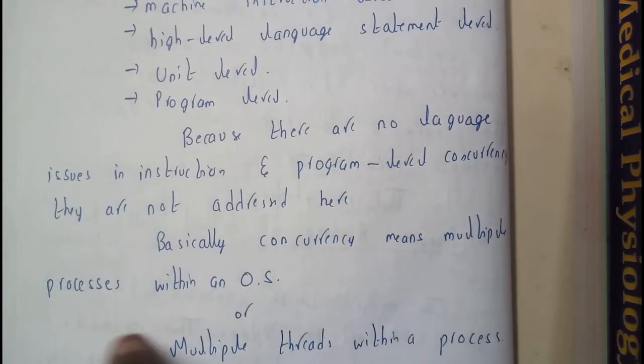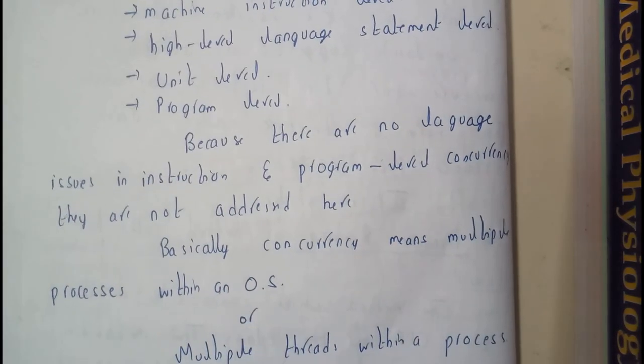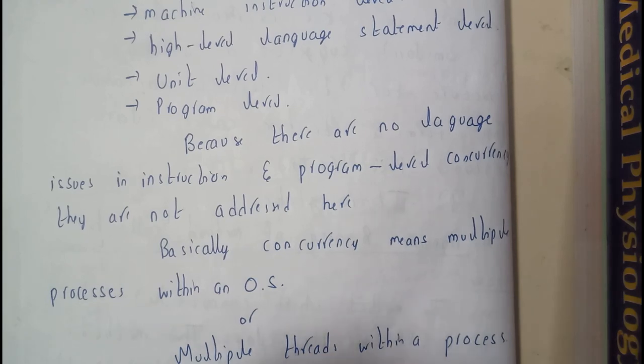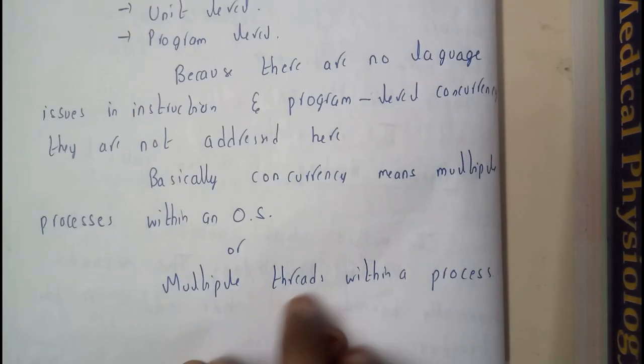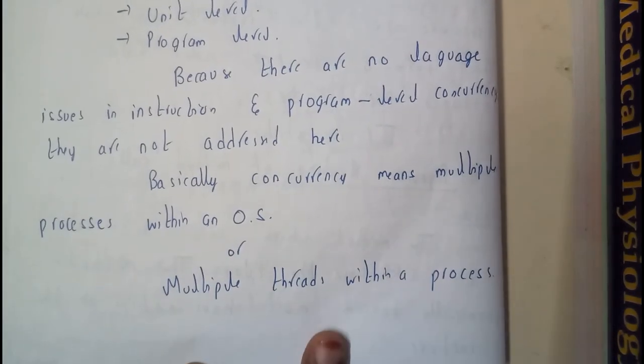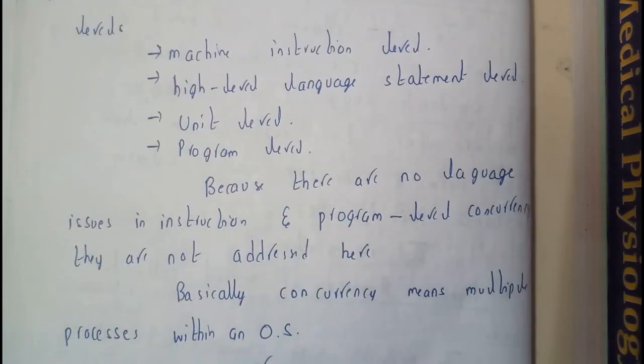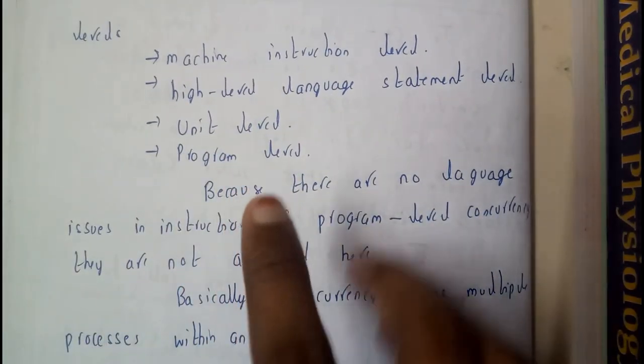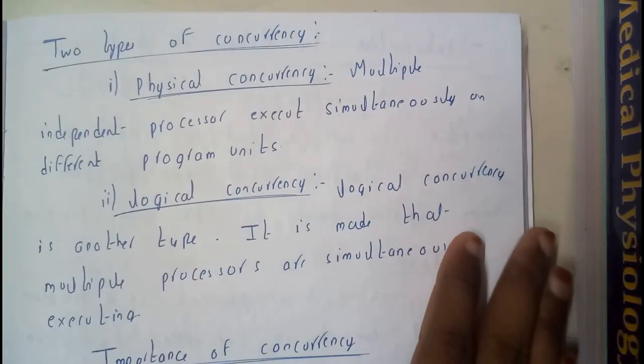Basically concurrency means multiple processors within an operating system, which is nothing but multi-threading within a processor. Having multiple processors within a single OS is what we call as concurrency.